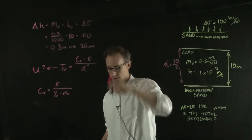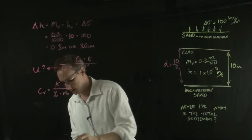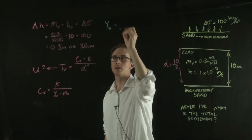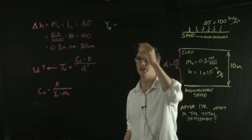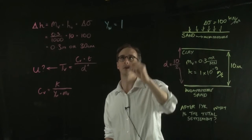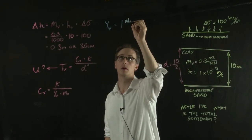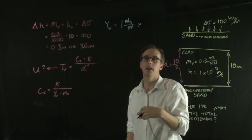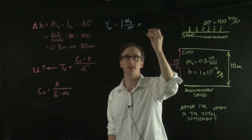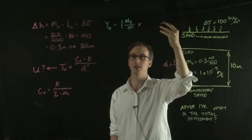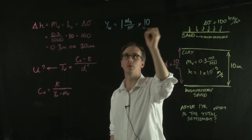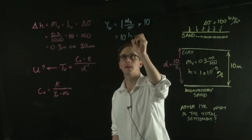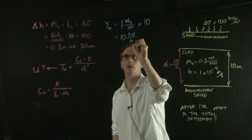Now the unit weight of water is equal to the density of water, which is 1 megagram per metre cubed, multiplied by the acceleration due to gravity, which is 9.8, or we'll just say 10. So the unit weight of water is 10 kilonewtons per metre cubed.